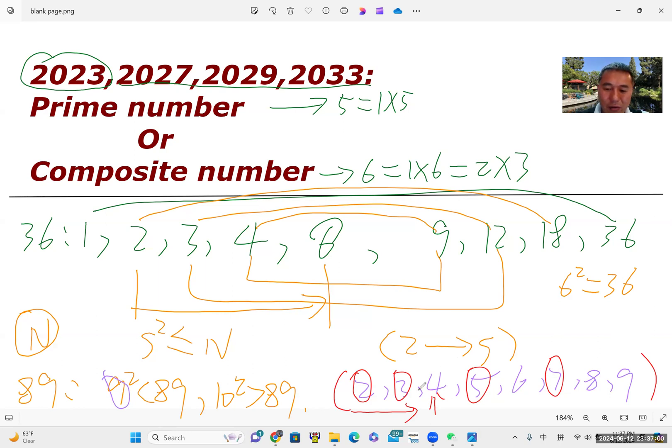Yeah, it's very easy to know. Two, three, five, seven. No one is a factor of 89. So 89 is prime.